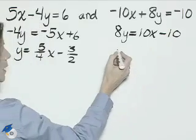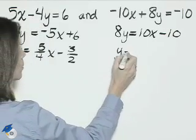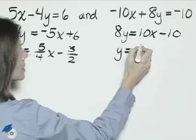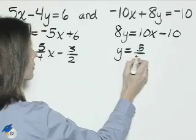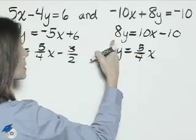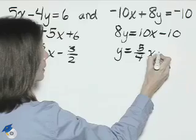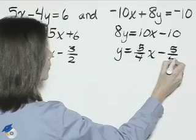Divide everything by positive 8. We'll have y equals 10 divided by 8 simplifies to 5-fourths x minus 10 divided by 8, which is minus 5-fourths.